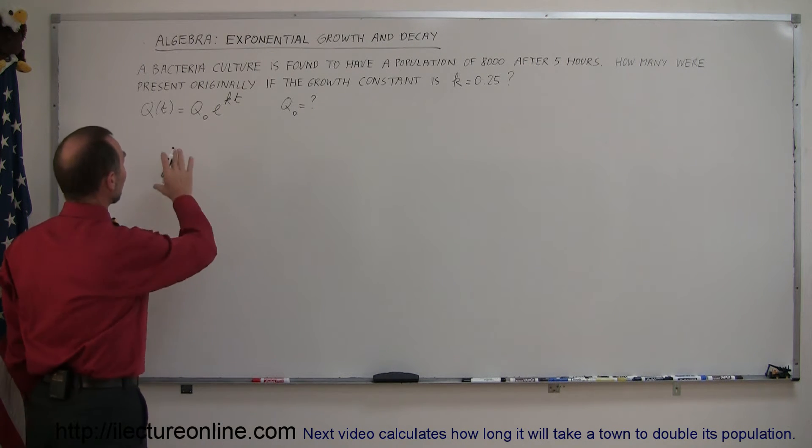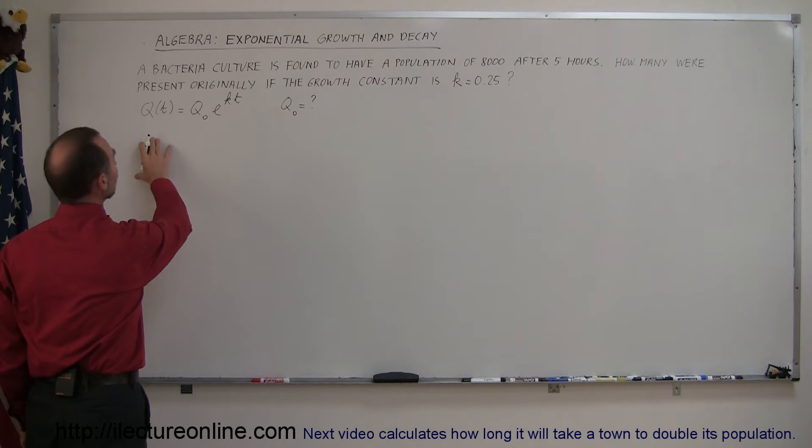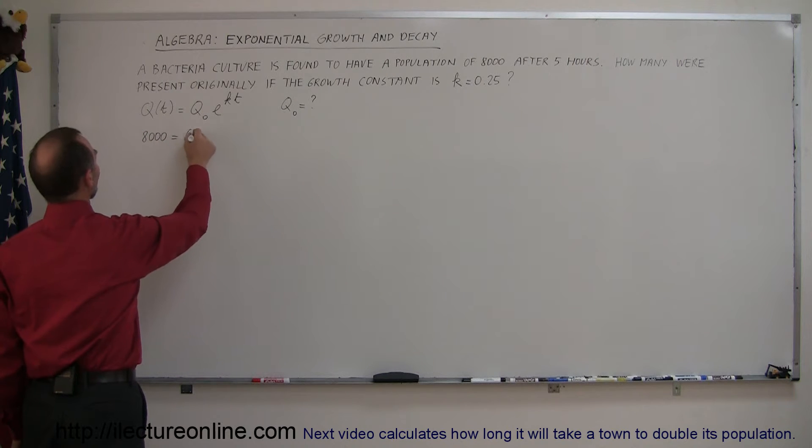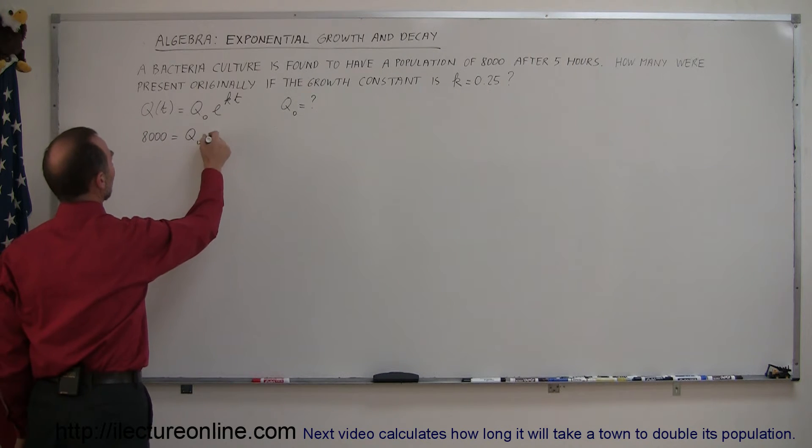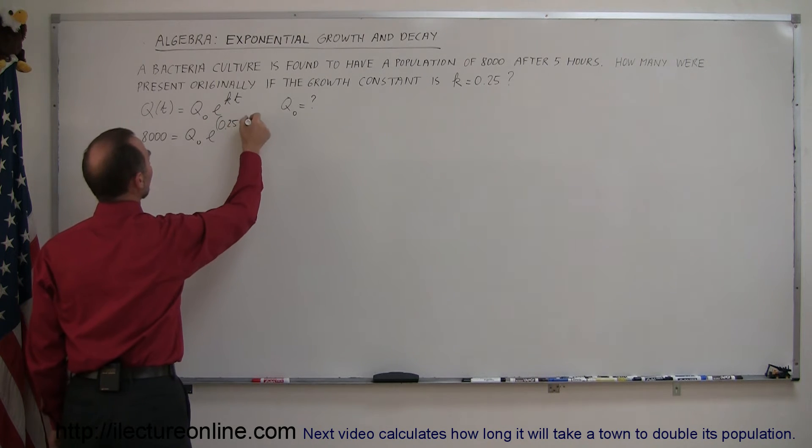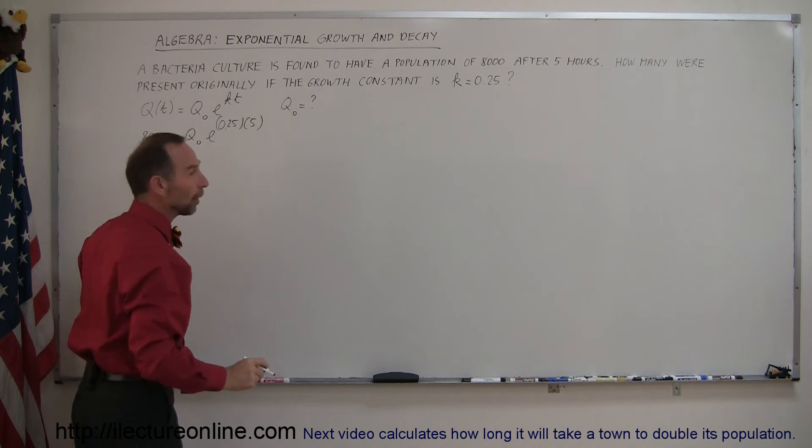Alright, let's plug in the numbers that we have. So we have q sub t, q after five hours is 8,000. The original quantity is what we're looking for. Then we have e to the growth constant 0.25 times the time which is five hours. There we go.